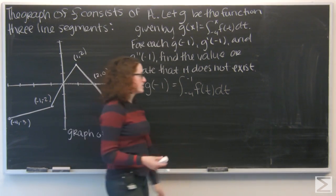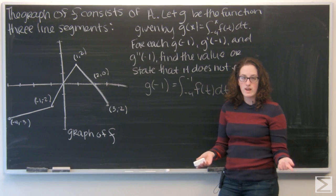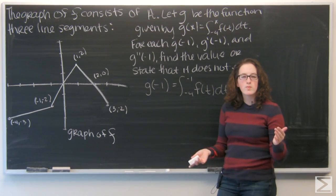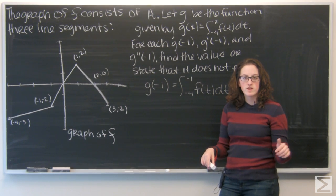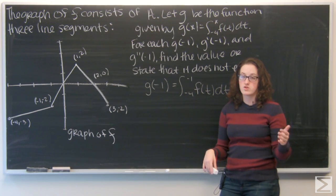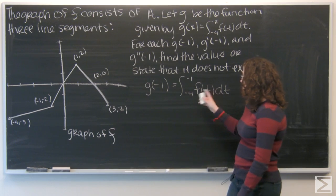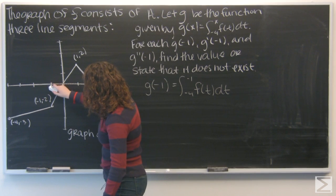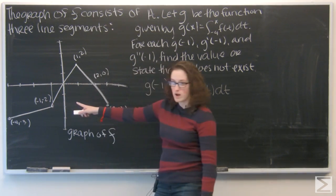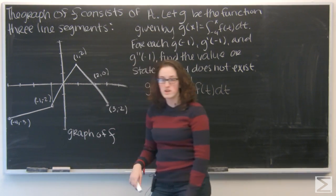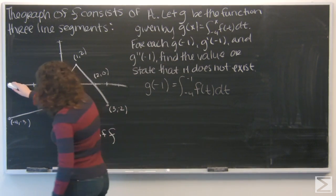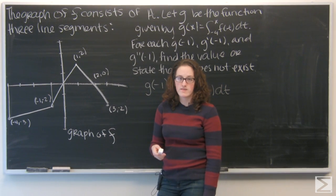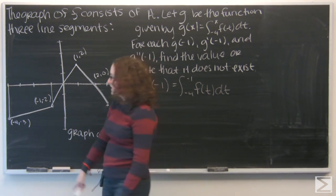So I want to integrate f of t from negative four to negative one. Let's look at the picture. I don't know exactly what f of t is, but I am given a graph of it. We can think of a definite integral as the area under the curve. So looking at negative one and negative four on our function: here's negative one, I have the point negative one, negative two. And there's negative four, with the point negative four, negative three. I want to find this area.